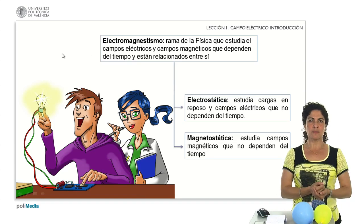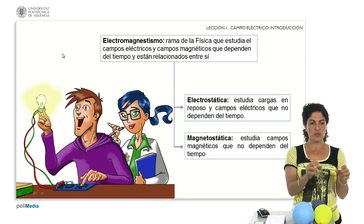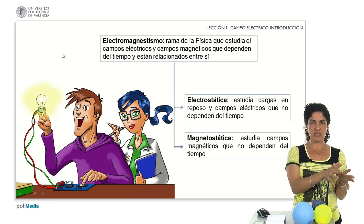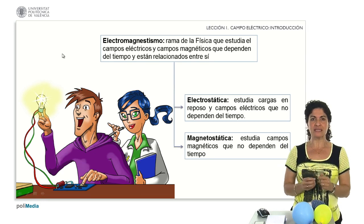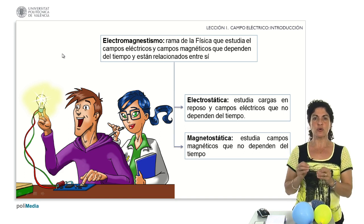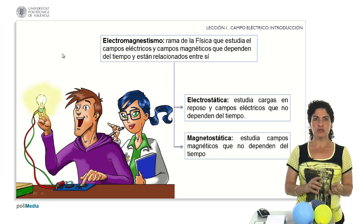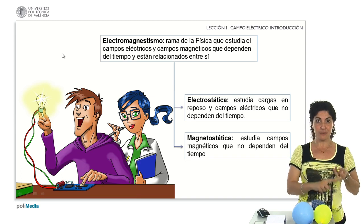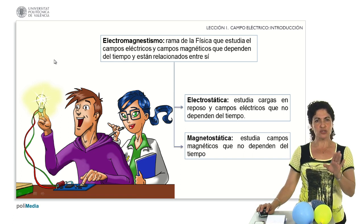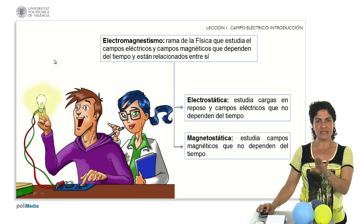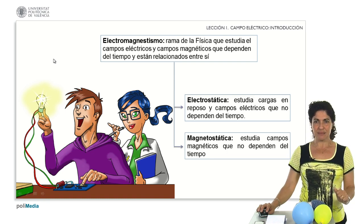Traditionally, the study of electromagnetism has been divided into two blocks: one associated with electrical effects and the other with magnetic effects. Even one of the discoverers of the relationship between these two effects, Hans Christian Ørsted, was a professor of electricity, magnetism, and galvanism. It was not until the second half of the 19th century that they found the relationship between electrical and magnetic effects — that in fact both have exactly the same origin: the charge possessed by materials.